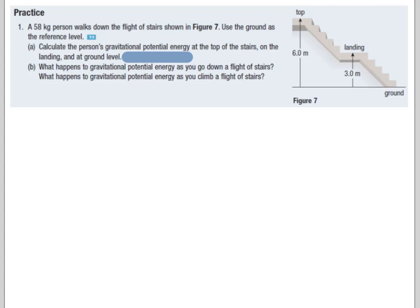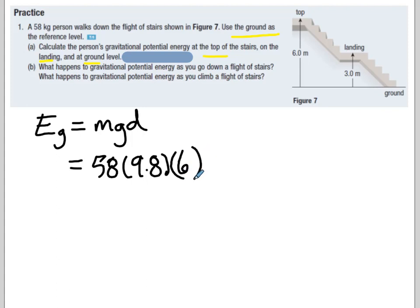So here's a 58 kilogram person walks down a flight of stairs, use the ground as the reference level. So again, they're telling us where the reference level is, that's really important. Some questions you get to choose it, and if you choose wisely you can make the problem really easy, or you can make it really difficult. So if you want to pause it and try this, you can go for it right now. So we're going to calculate the person's gravitational potential energy at the top of the stairs, on the landing, and on the ground level. So it's the same expression, you'll notice it's just a small little three variables multiplied together, m, g, h, or d, it doesn't really matter. So if we do these 58 times 9.8. Now, if we're at the top of the stairs, this becomes a 6. So we have 58 times 9.8 times 6, and we have 3410 joules.